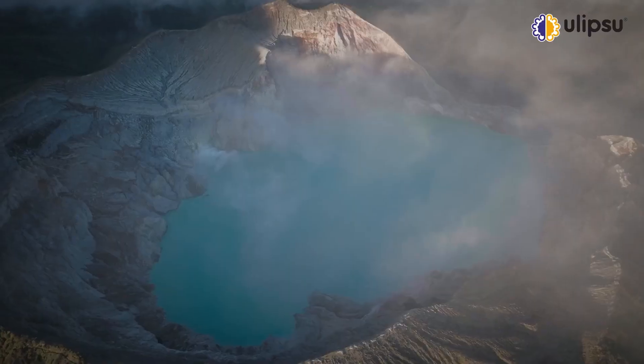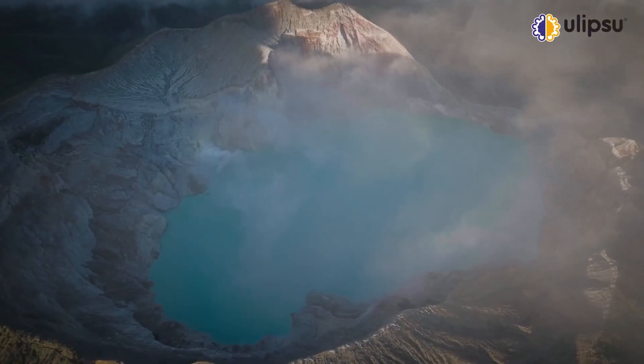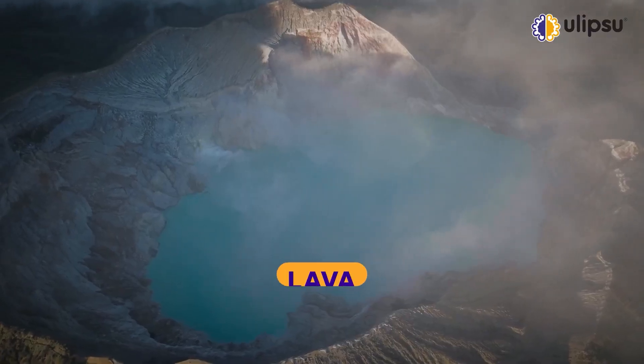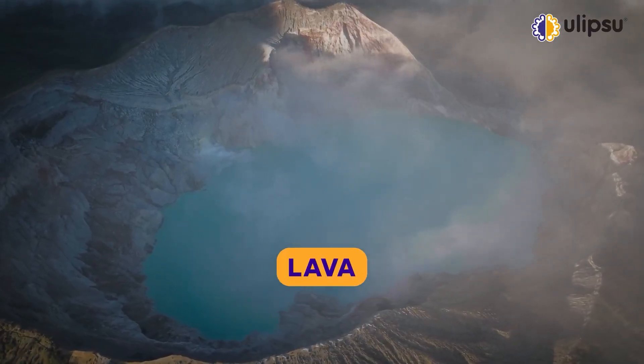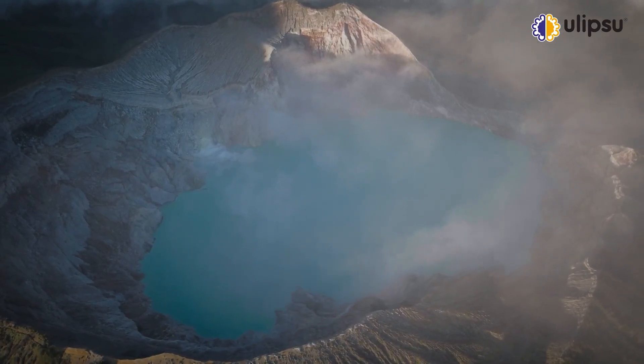The first one in the list is volcanic eruption. How does volcanic eruption cause water pollution? When a volcano erupts, the lava gets mixed with water and pollutes it.